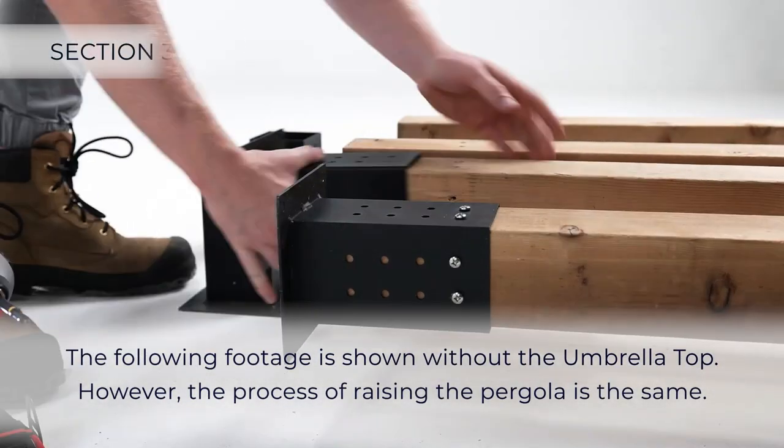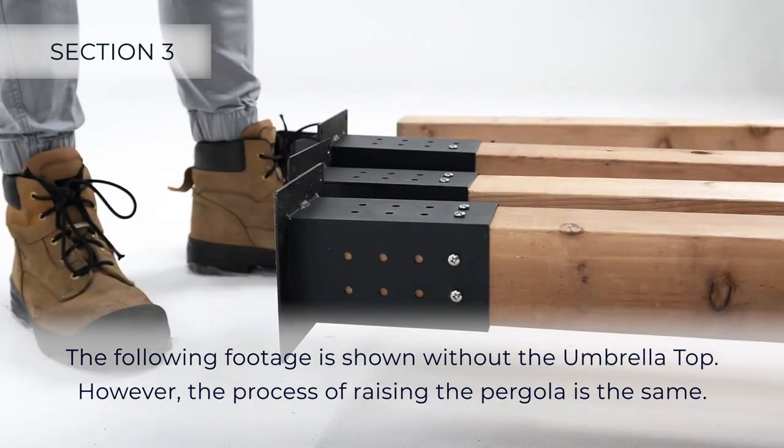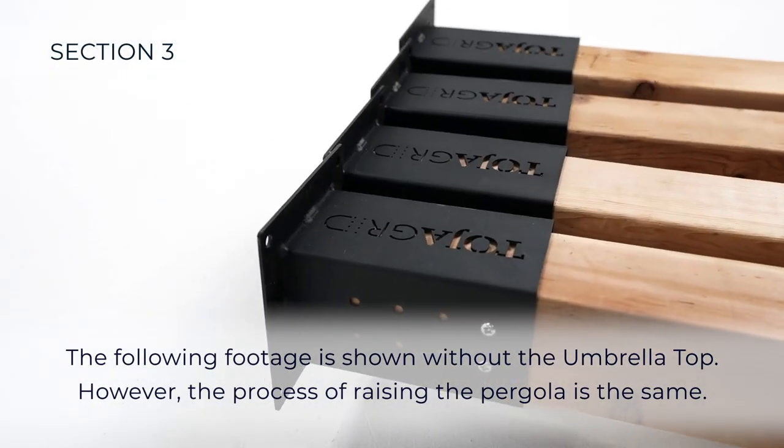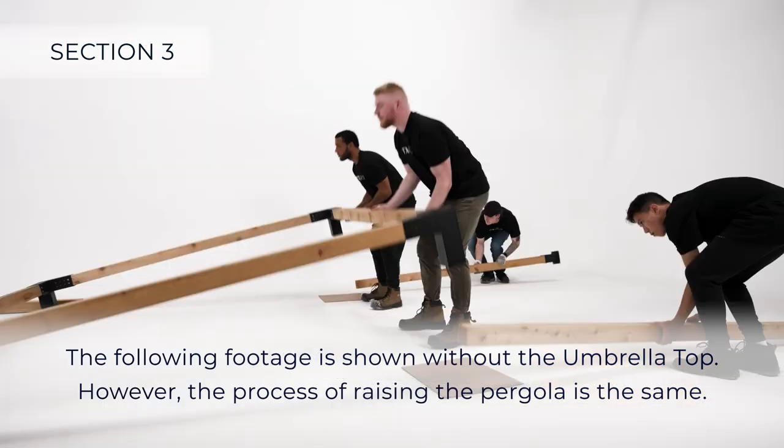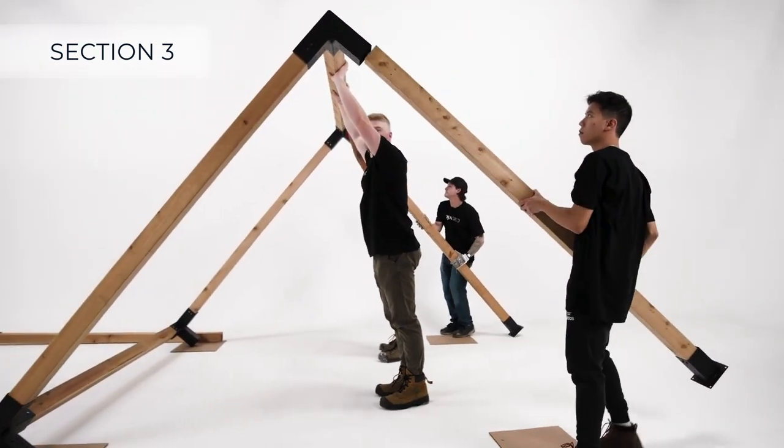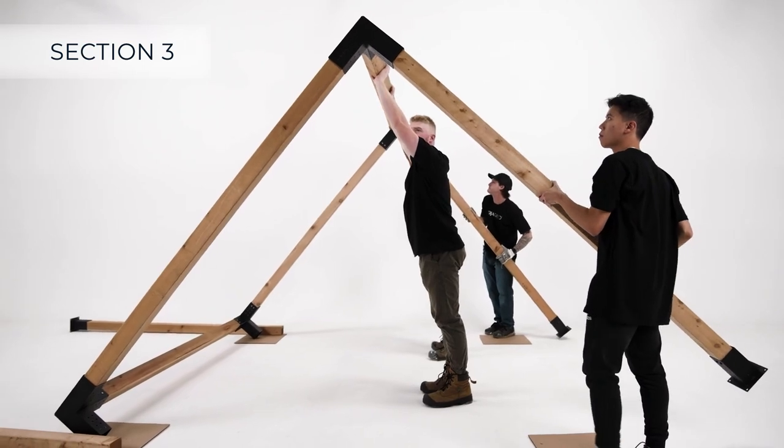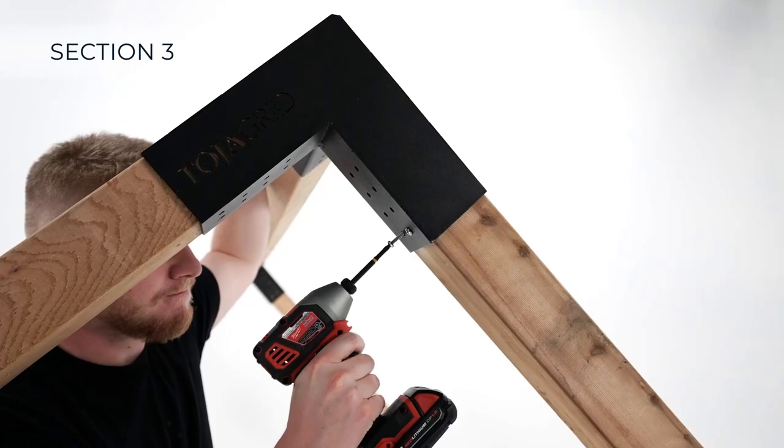Once the top is complete, and solo brackets have been placed and fastened on all of the vertical posts, lift one side and insert two vertical posts into the bottom of the trio brackets, and secure with screws.